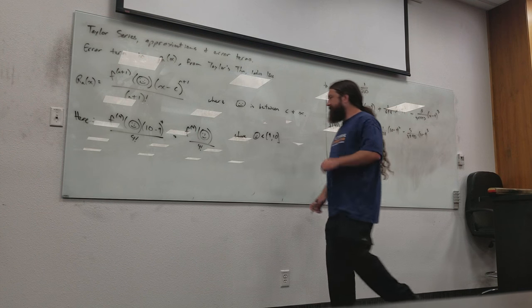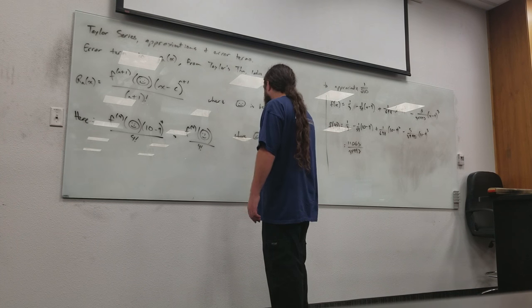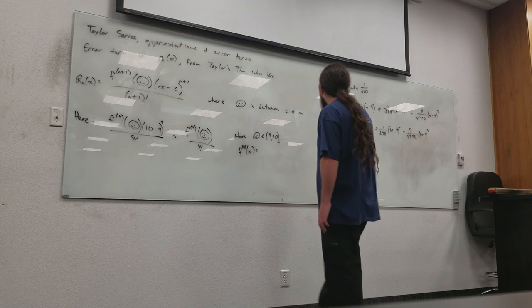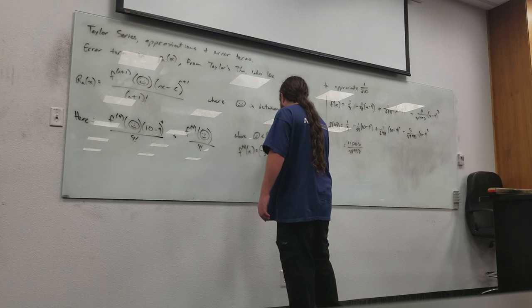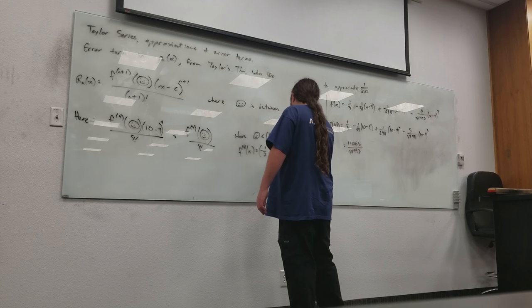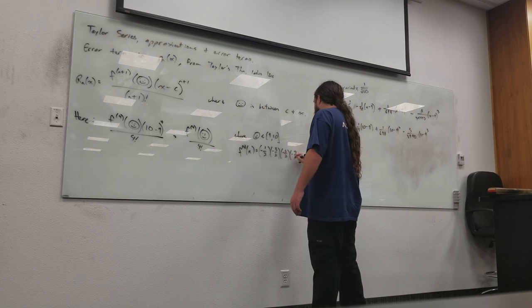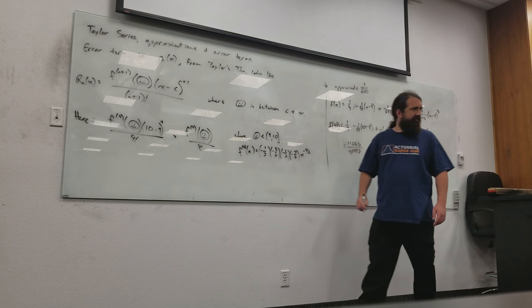So, this looks like the fourth derivative of f evaluated somewhere over 4 factorial. Alright, now, this is going to be in the interval from 9 to 10 because we're somewhere in between the center of the series and the place where we're evaluating the function. So, alright. Let's see. F4 of x. Alright, now, we started out with x to the negative 1 half. So, we're going to have what? Negative 1 half times negative 3 halves times negative 5 halves times negative 7 halves times x to the negative 9 halves. Isn't that what your derivative looks like? Okay.